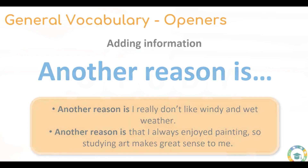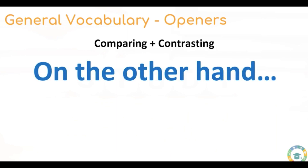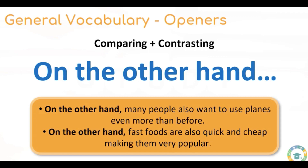Let's move on to the openers for comparing and contrasting and showing a difference in thinking. 'On the other hand' signals to the examiner that you want to discuss a difference in opinion. For example: 'On the other hand, many people also want to use planes even more than before.' And: 'On the other hand, fast foods are also quick and cheap, making them very popular.'